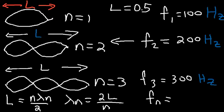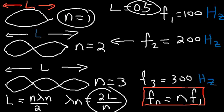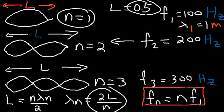The frequency fn is basically equal to n times f1. Now let's talk about the wavelength. The wavelength is 2L divided by n, so 2 times 0.5, which is 1. When n is 1, the wavelength is going to be 1 meter — that's the wavelength corresponding to the first standing wave pattern in this example. Notice that the frequency increases with the n value, but the wavelength is going to decrease. Because the frequency increased by a factor of 2, the wavelength decreases by a factor of 2. So originally it was 1 meter, but now it's going to be 1 half of a meter.